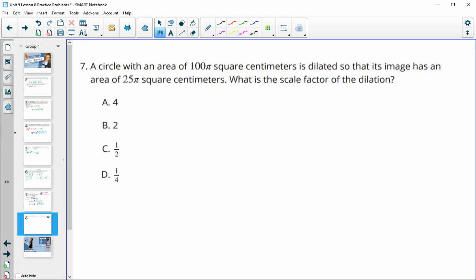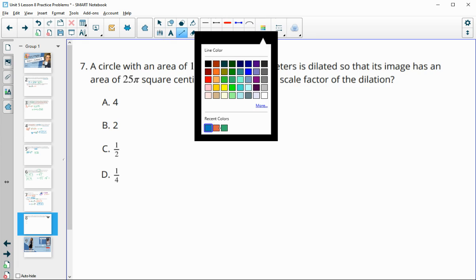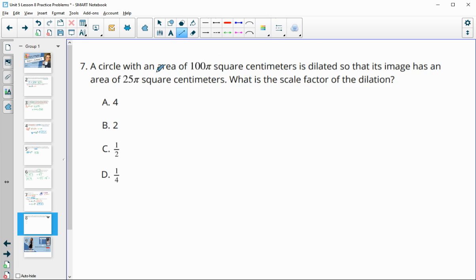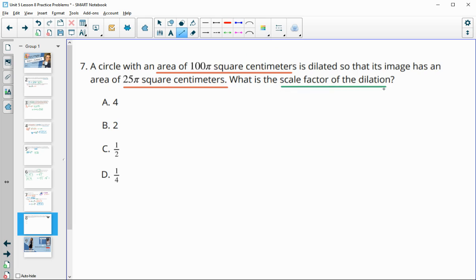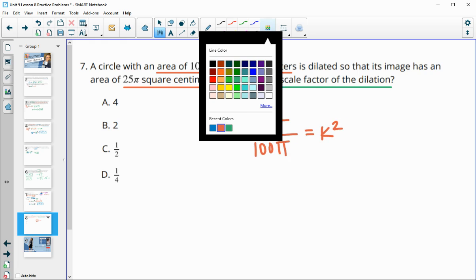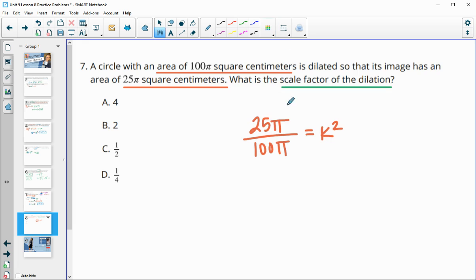Number seven says a circle with an area of 100 pi square centimeters is dilated so that its image has an area of 25 pi square centimeters. What would the scale factor be of this dilation? When they're comparing areas, we know that when we do the new area divided by the original area, that will give us our k squared. In order to find the scale factor, we're going to need to simplify and square root this.